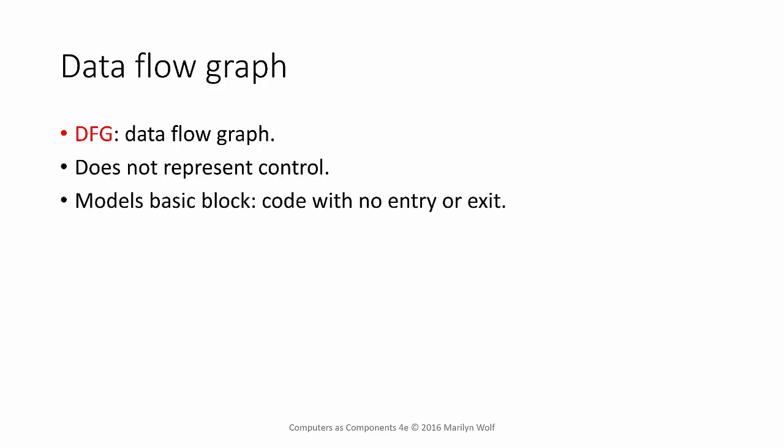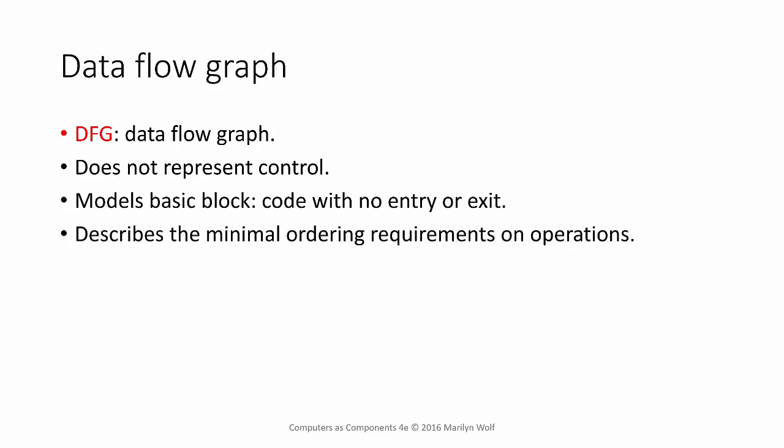The data flow graph models a basic block of code — that is, code that's entered at the top and exits at the bottom. The purpose of the data flow graph is to describe the minimal relationships in order between the operations in that basic block.